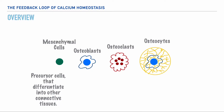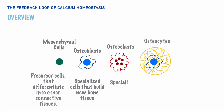Now osteoblasts are specialized bone cells, and their primary focus is to build bone tissue. While osteoclasts are also specialized bone cells, their primary focus is to clean up old or damaged bone cells or reabsorb bone tissue. So here's a quick tip: the B in osteoblasts is for building up, and the C in osteoclasts is for cleaning up or reabsorbing bone tissue.